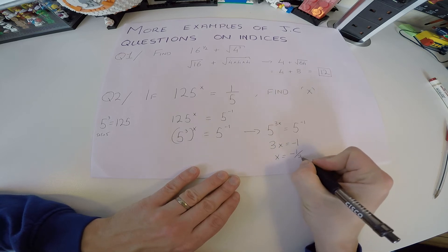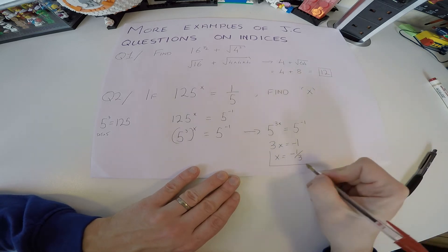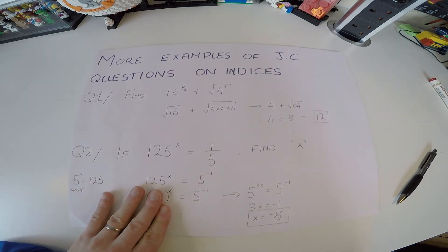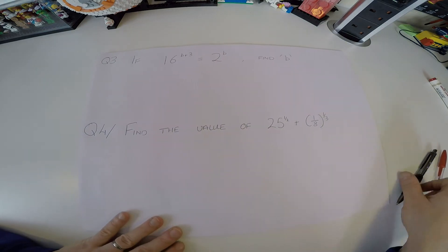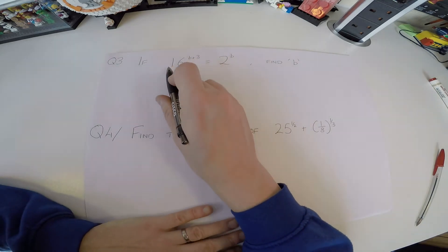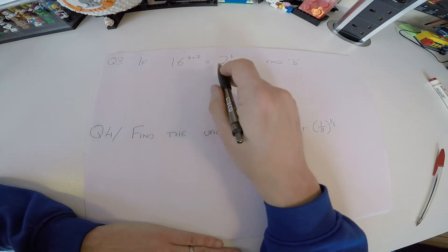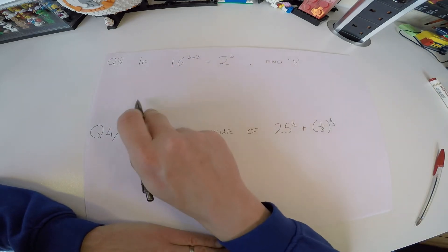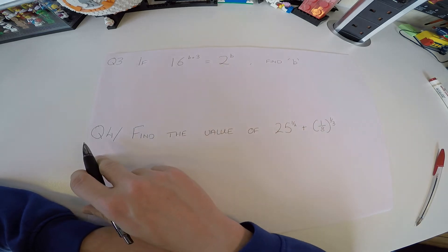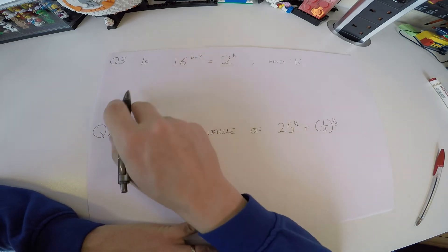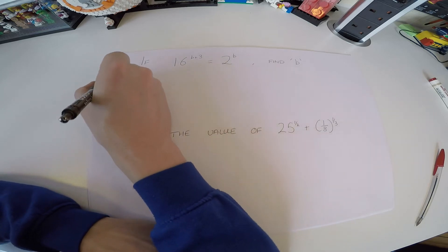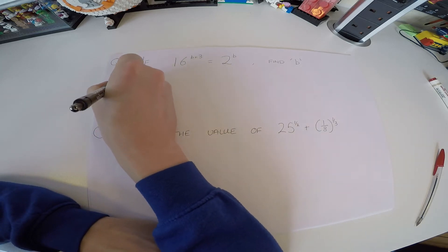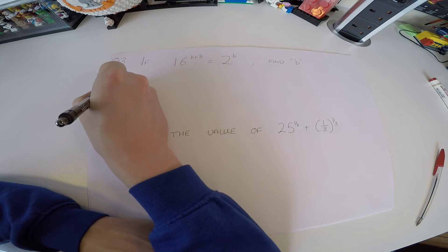Question 3: if 16 to the power of (b + 3) equals 2 to the power of b, find b. Like the last question, let's bring 16 to a similar base. Can we write 16 as 2 to the power of something? 2 to the power of 4 is 16 — that's 2 × 2 × 2 × 2.